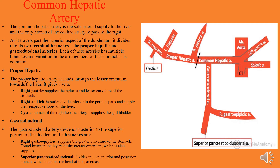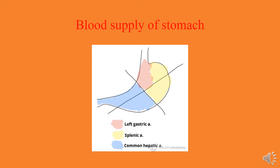Looking at this diagram, you can see the stomach and its different parts. The upper part of the stomach is visible. The celiac trunk branches supply the exterior of the stomach.